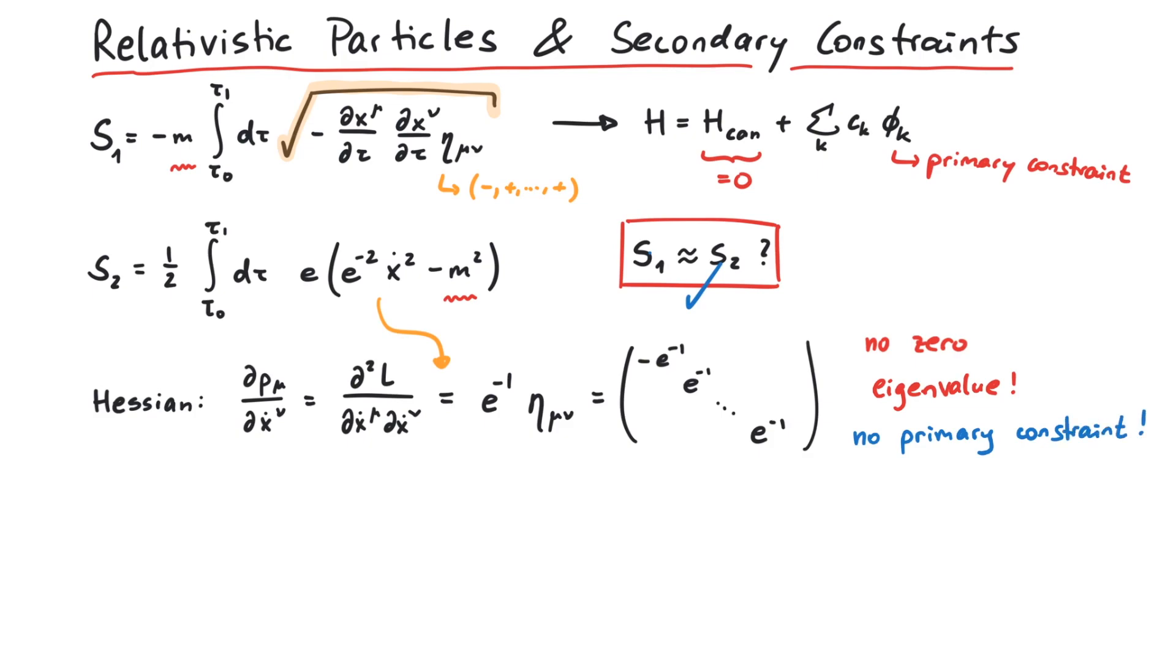Since we still describe the same system, a relativistic point particle, the constraint p squared plus m squared equals zero must also be present for the new Lagrangian. The short explanation is that yes, it is present, but it does not just follow from the definition of the conjugated momenta. Instead, we would also have to include the equations of motion.